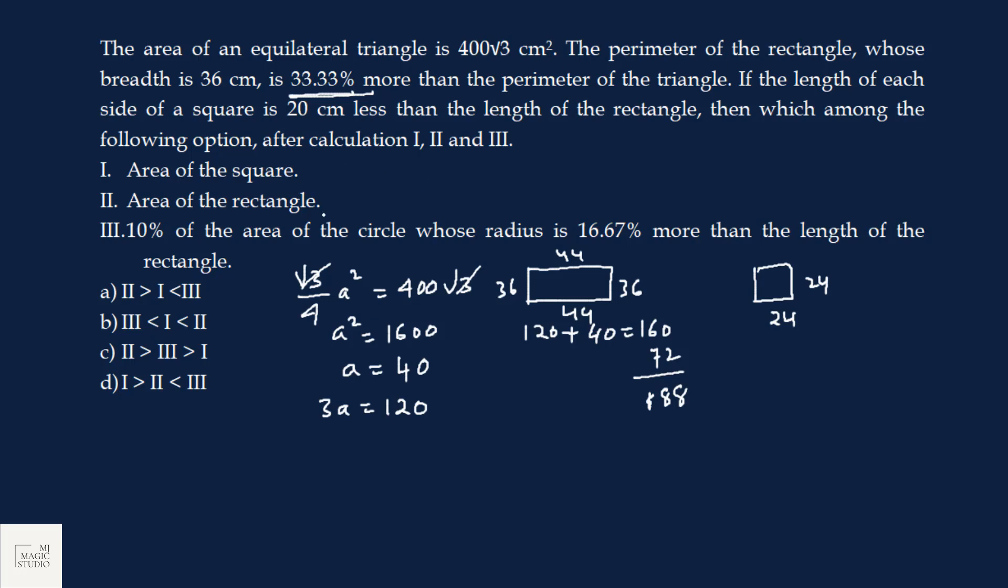Then which among the following options after calculation. Area of the square. Area of the square is 24 square, that is 576. Area of rectangle. Area of rectangle would be 36 into 44, that equals 1584. Obviously, 1 is less than 2. 1 is less than 2. 1 is greater than 2, nahi hai. 2 is greater than 1.